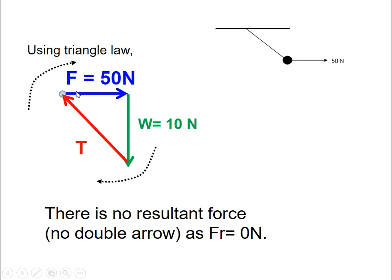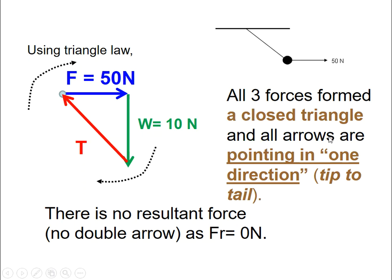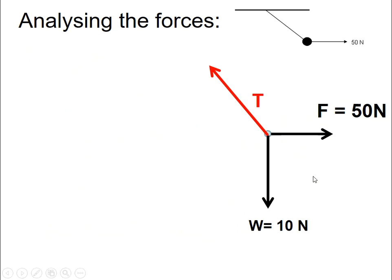This shows that there is no resultant force, and this shows that there is a closed triangle, and the arrows are all pointing. You can assume that they are all pointing in a direction. In this case, it looks like it's going a clockwise direction, or tip to tail.